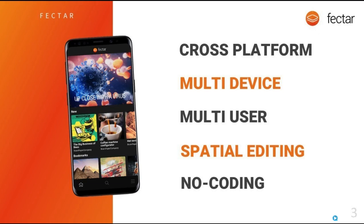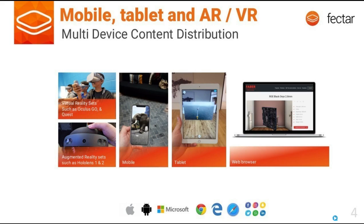What do we mean by multi-device content distribution? The idea is that whatever device, any device, any place, anytime, you can view the content. For augmented reality content, it's estimated that around 1.4 billion smartphones worldwide are now able to view augmented reality the way we use it in Factor.